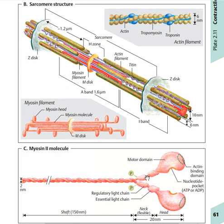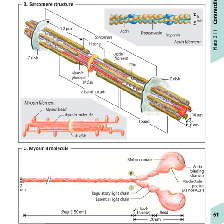Let's visualize the head of the myosin filament. At this position you have the motor domain, the actin binding domain, and the nucleotide pocket — this is the head. You have the neck, which is made up of the essential light chain and the regulatory light chain. This head region is 20 nanometres, and the tail is 150 nanometres.